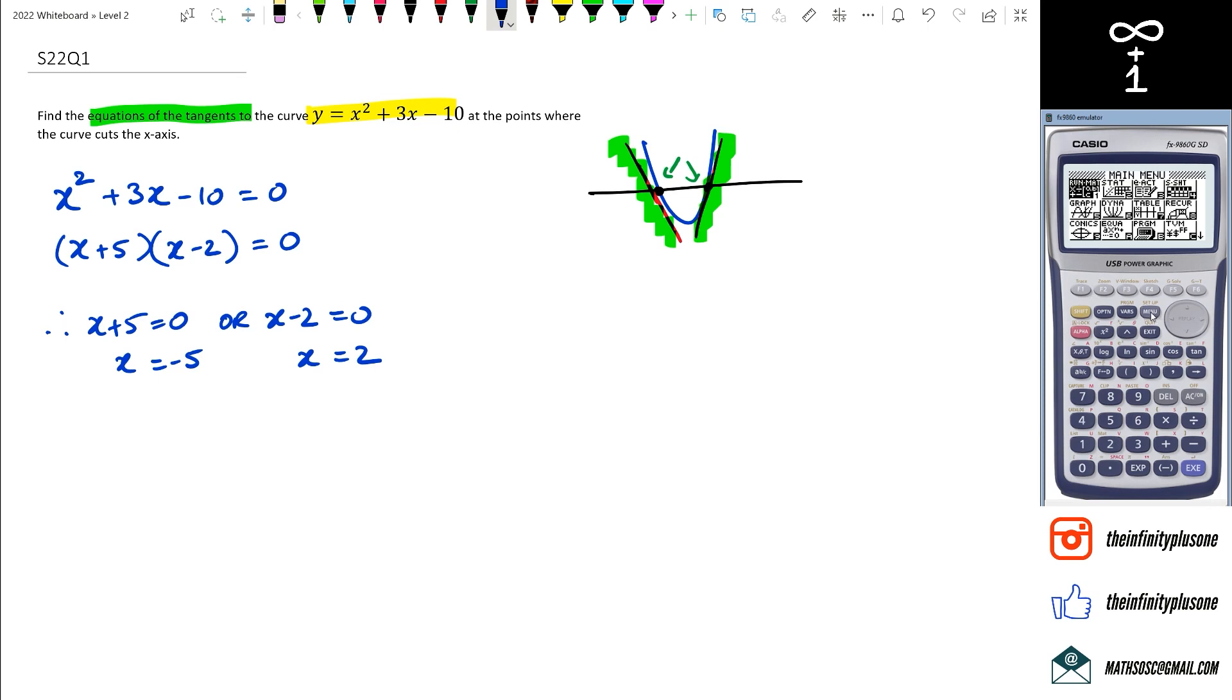Now, if you're in a bit of a rush and you just don't want to do the quadratic, because remember, this is a calculus paper, you could definitely go to polynomial degree 2 and just put in those values. So 1, 3, and minus 10. And what that should give you is your two x values, which is 2 and negative 5. So negative 5 happens to be there, and 2 happens to be there.